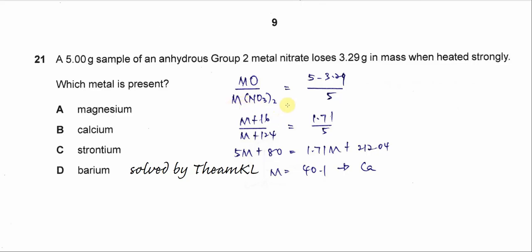Let's use the mass given by the question. So 5 gram is actually the metal nitrate. So we just put here 5.